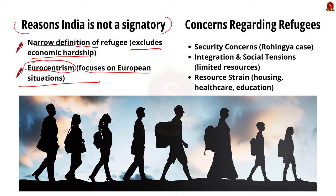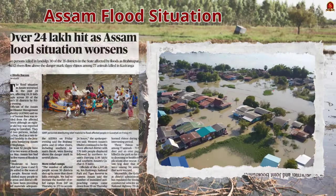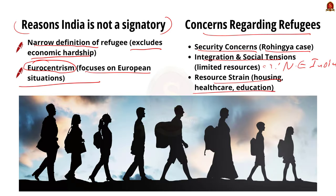Concerns regarding refugees in India include: security concerns, particularly in the case of Rohingya, leading to calls for stricter immigration controls; integration and social tension, where integrating refugees can be challenging, especially in resource-limited areas like Northeastern India; and resource strain, where the influx can burden housing, healthcare, and education, particularly in economically disadvantaged areas. India's approach involves balancing humanitarian concerns with national security and socio-economic considerations. As India upholds the principle of Vasudhaiva Kutumbakam, long-term action addressing the refugee crisis is needed.